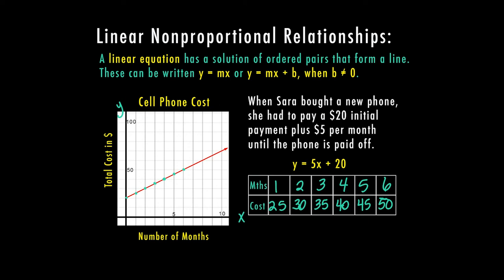We did have to pay something before we started paying monthly. So that's where you're going to end up with your non-proportional relationship. If there's anything to pay other than from the beginning at zero zero, in this case, since it is money, we would start at zero 20. So that is a non-proportional relationship.